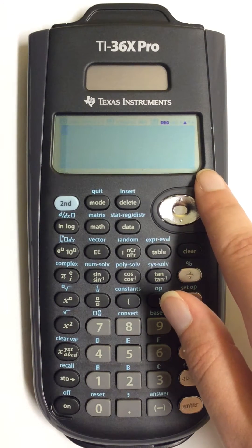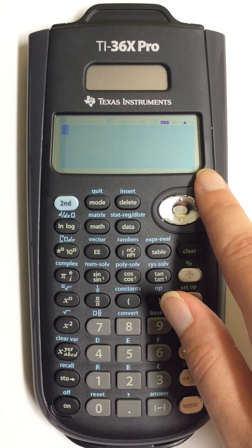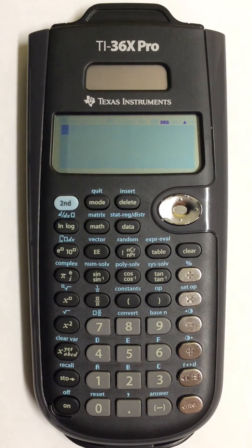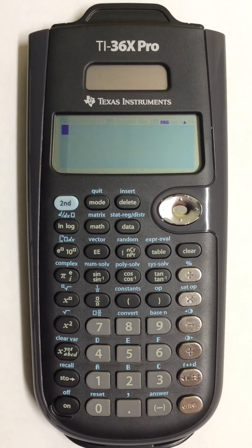You can then go back in and perform any calculations you need. So this is how to enter data for two variable statistics in your scientific calculator.